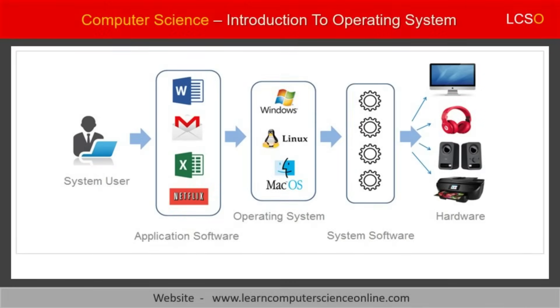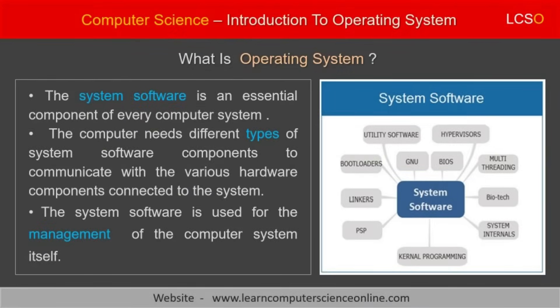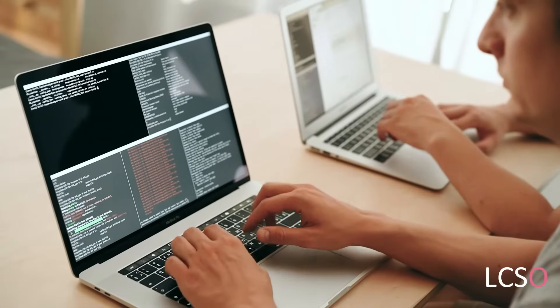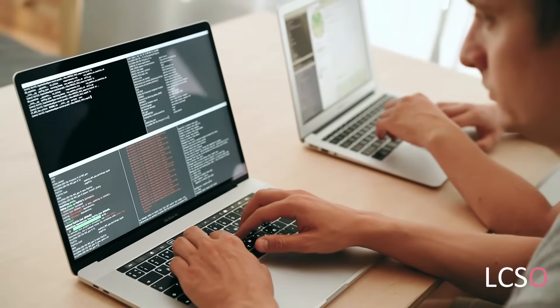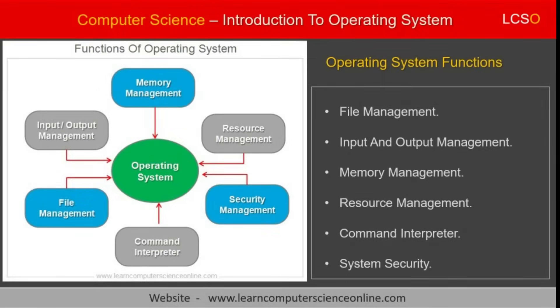The operating system is an essential component of every computer system. It is a type of system software used by the computer system itself to manage and operate the system. It also helps the computer user to interact with various hardware components that are either connected or part of the computer system. An operating system performs some of the most important functions that are crucial for the operation, performance, and the safety of the computer system. Resource management is one such important function performed by the operating system.